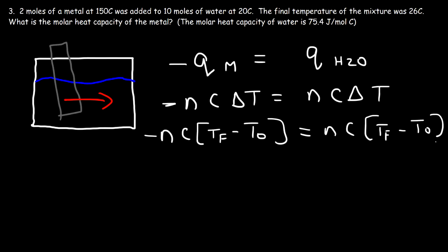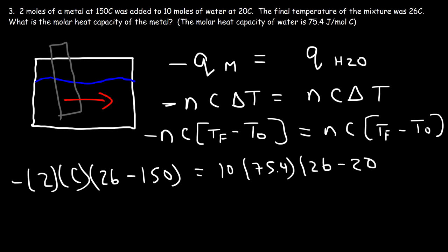Delta T is the final temperature minus the initial temperature. The left side is for the metal, the right side is for the water. So we have 2 moles of metal, so n is 2. Our goal is to calculate C. The final temperature is 26 and the initial temperature of the metal is 150. On the right, the number of moles of water is 10. The molar heat capacity of water is 75.4. The final temperature is 26 and the initial temperature of water is 20.